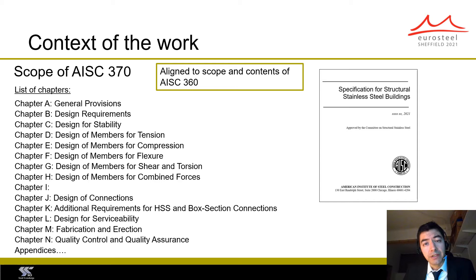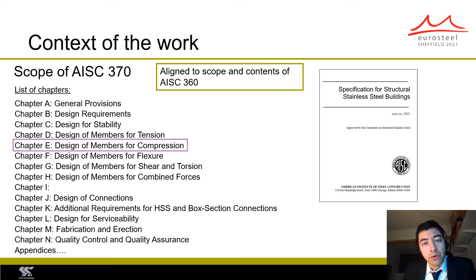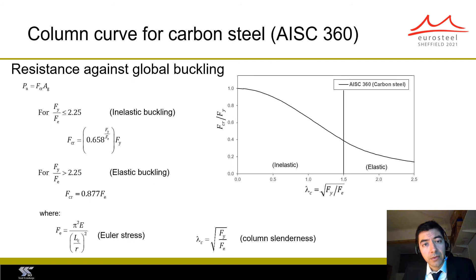The scope of AISC 370, as well as its design approach, is aligned as much as possible to that in AISC 360, which is the equivalent AISC specification for the design of structures made of traditional carbon steel. Those familiar with AISC 360 will notice that the list of chapters is almost identical to the list of chapters in AISC 360. In this presentation, I am going to be focusing on the rules for compression members and more specifically for the column buckling curves.